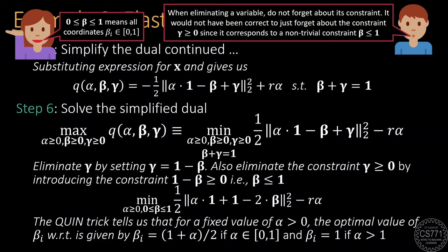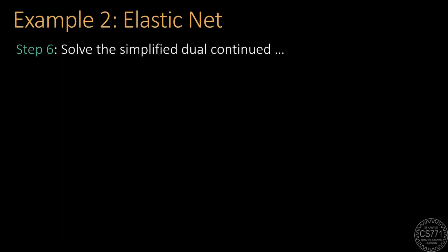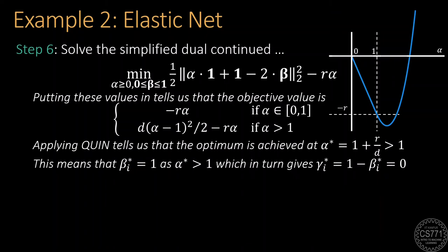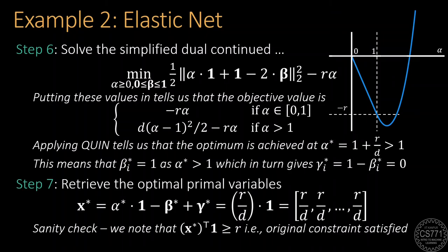If alpha is within the interval 0 to 1, the optimal value of every coordinate of beta is (1 plus alpha) divided by 2; else if alpha is greater than 1, the optimal value of every coordinate of beta is 1. Putting these values into the objective eliminates beta and lets us visualize the dual objective as a function of alpha alone. Applying the Quinn trick once more tells us the optimal alpha is (1 plus r) divided by d, giving optimal beta i as 1 and gamma i as 0 for all i. Using this, we recover the optimal primal variable x, which satisfies the inequality constraint — a good sanity check. Congratulations, we have just solved that complicated-looking optimization problem by creating and solving the dual.